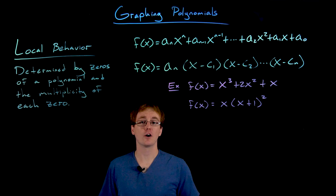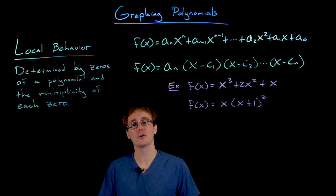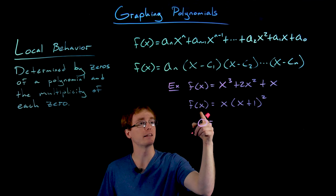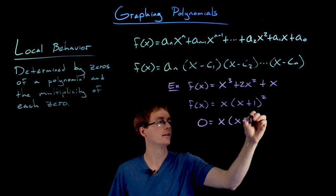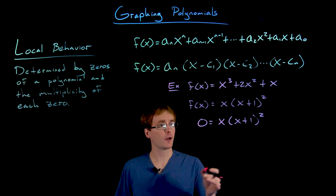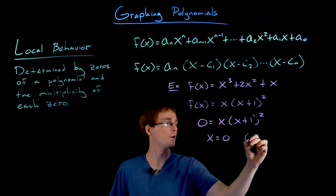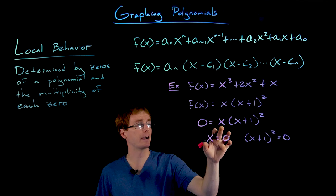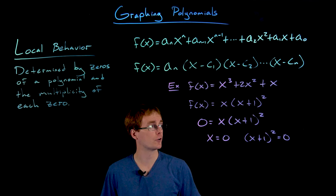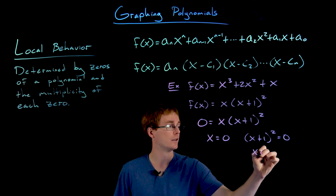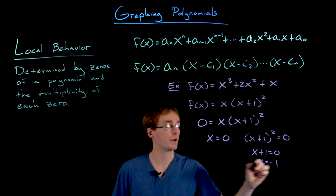To find the zeros of a polynomial — also called roots, x-intercepts, or horizontal intercepts — we set the output y equal to zero and solve. The factored form is helpful here because we can use the zero product property: the only way two or more quantities multiply to give zero is if one of them equals zero. So x equals zero is one zero, and setting x plus 1 squared equal to zero gives us x equals negative 1.